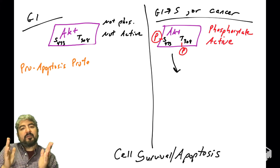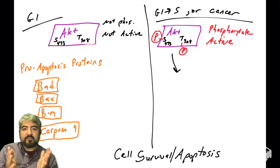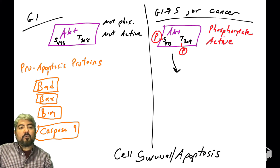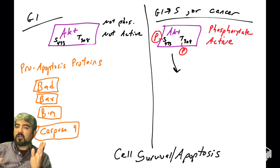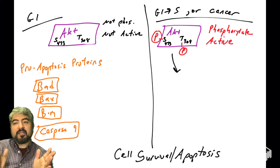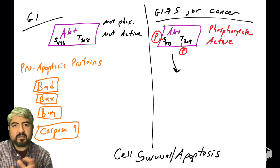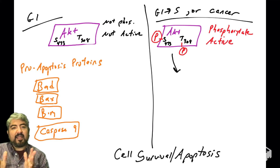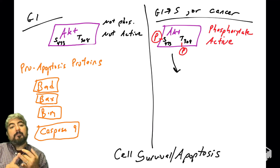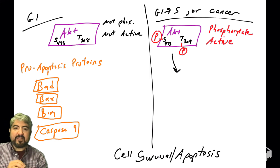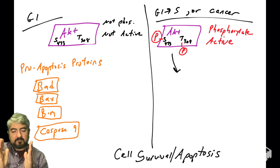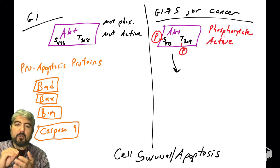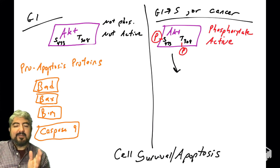These substrates are proteins involved in apoptosis. We'll talk about their full function later in the course, but for now we're going to introduce these proteins called BAD, BAX, BIM, and an enzyme called caspase-9. They are pro-apoptotic proteins. When they are active, they can promote apoptosis.